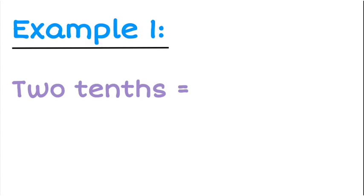So in this example, I've got something written in words, so two tenths. So as a fraction, I'm dividing by tenths, and I've got two lots of tenths.